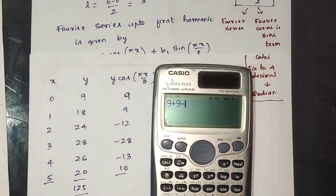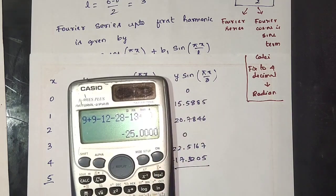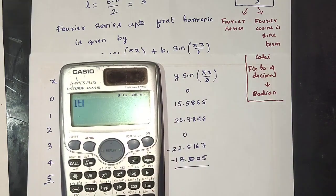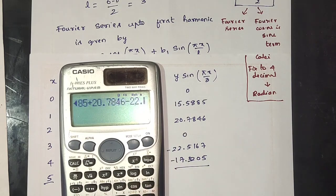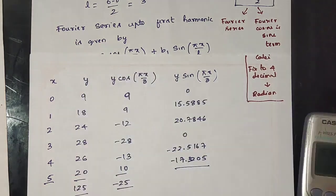x value 2: minus 28. Then results: minus 13, plus 10, minus 25. Next: 15.5885, minus 20.7846, minus 22.5161, minus 17.3201, minus 3.464.